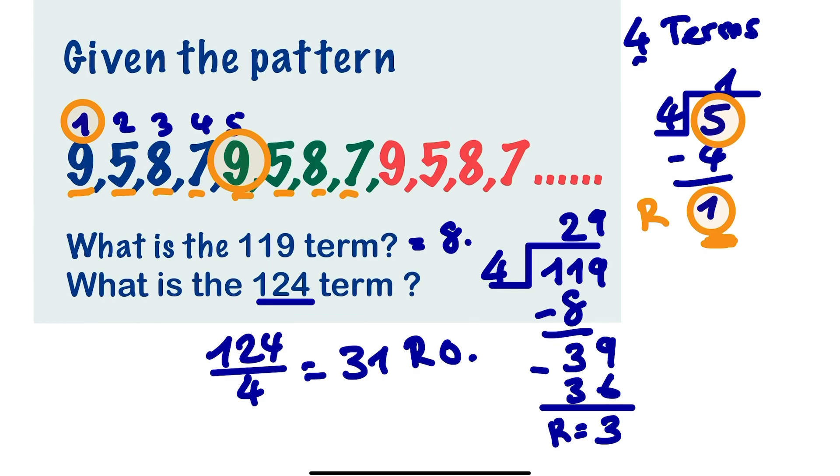So ask yourself, before the first term, which number is here? What number should be here? So you can see that before 9, we have 7. So it's the last term when the remainder is 0. So we choose the last term.